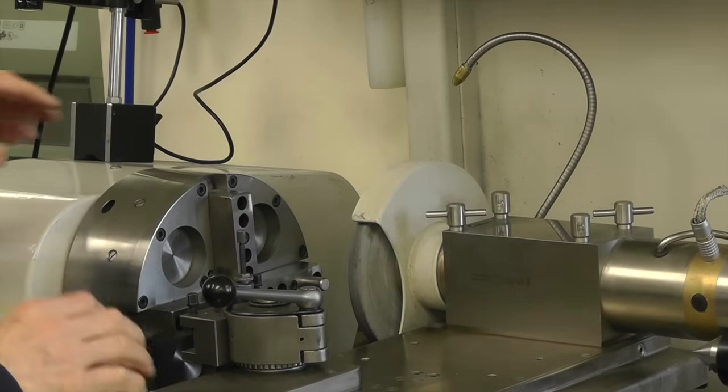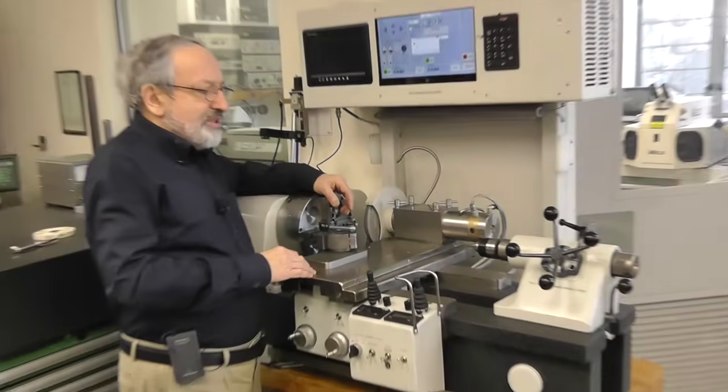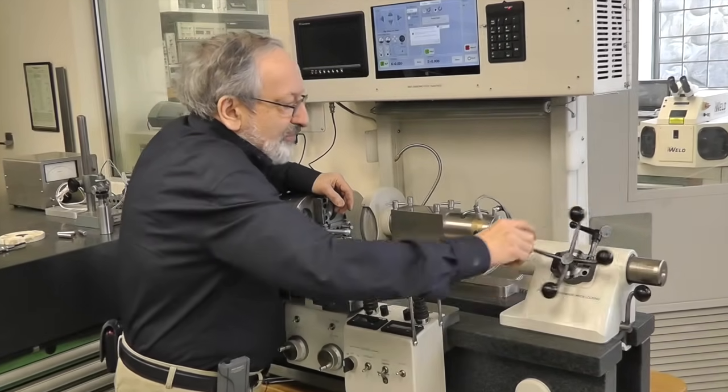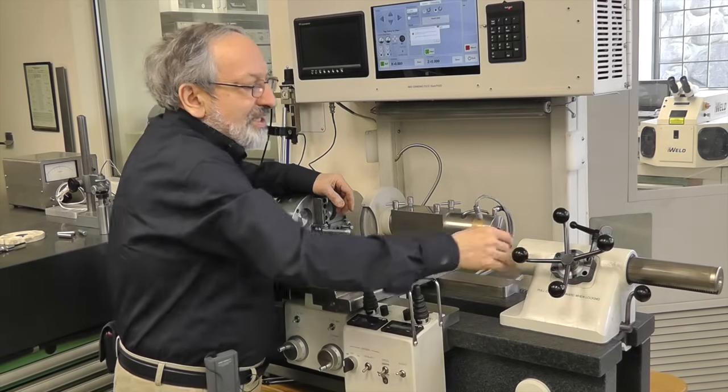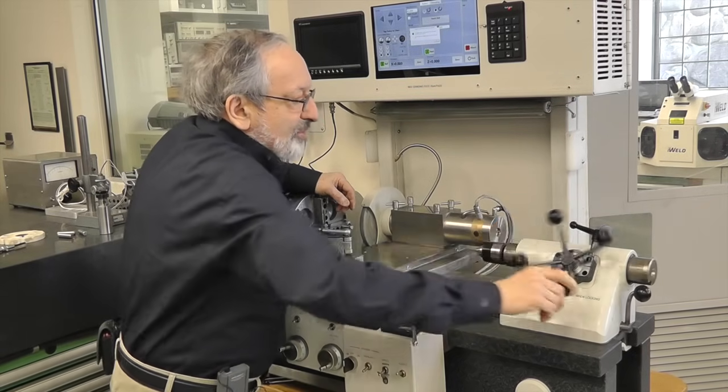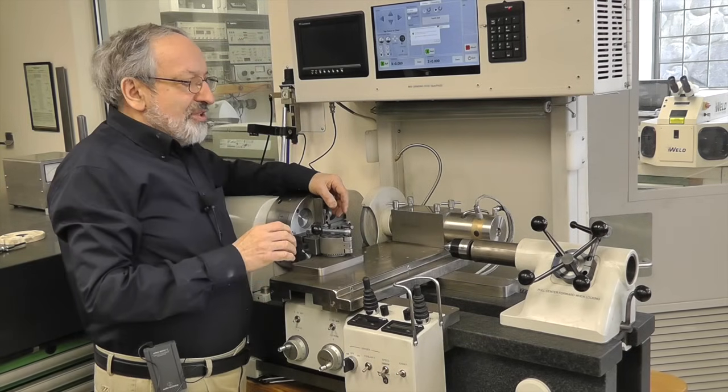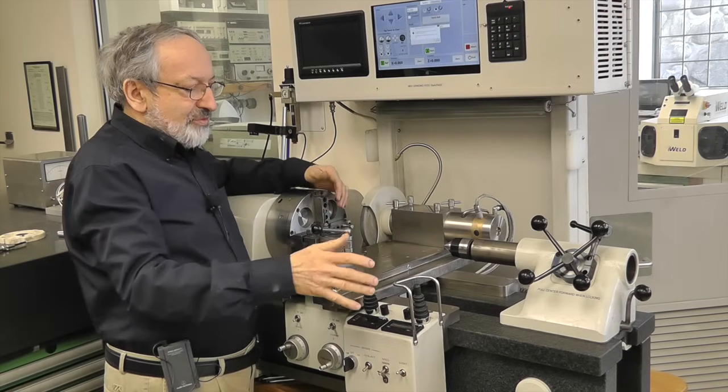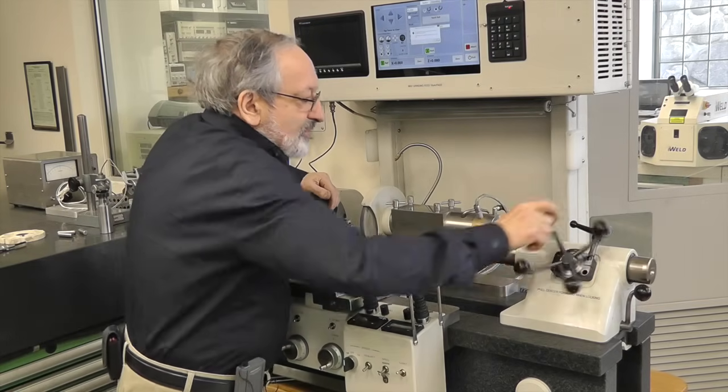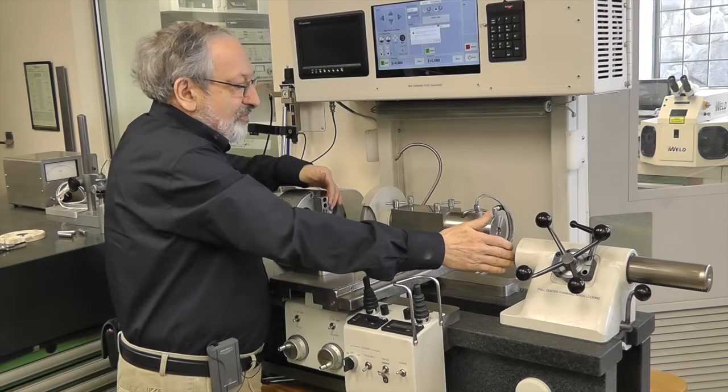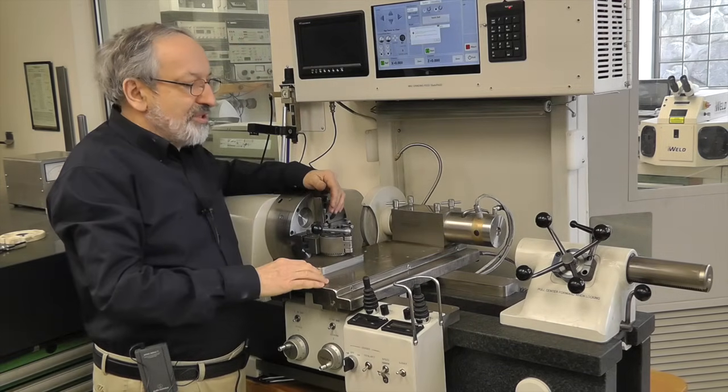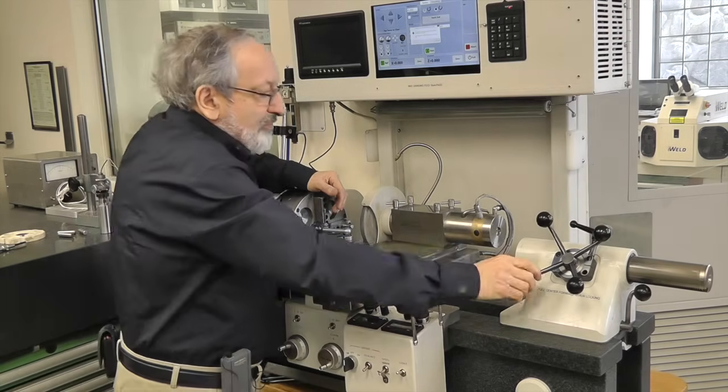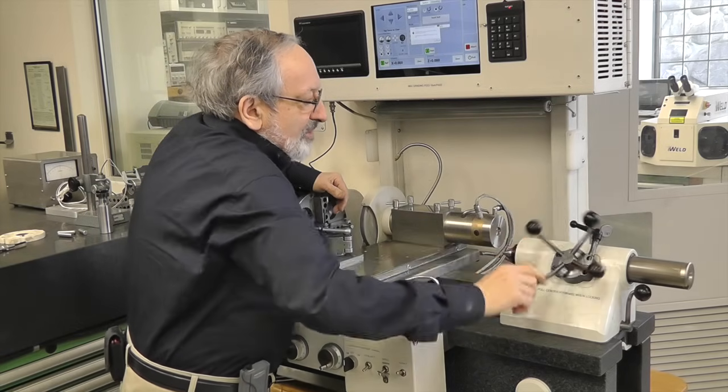Something else which is different about this lathe is the tailstock. The tailstock, which is also on air bearings, has a very long travel, all the way from the center being inside to the center being fully extended, about 300 mm. This is interesting because it allows you to have a very long center distance for a very small lathe. When the center is inside, I have almost 600 mm center distance, which is quite a lot for a small lathe like this, and even more if the bar can go inside.